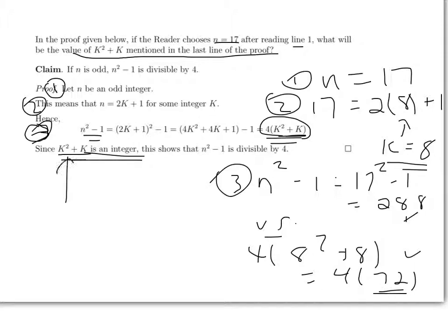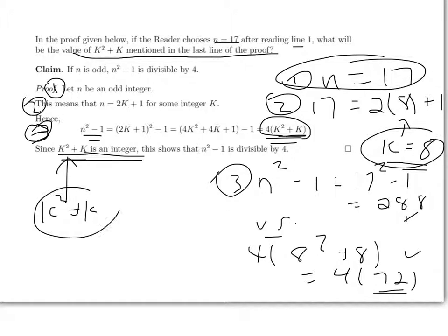So k squared plus k for, if you start with n equals 17, then your k will be 8. And by the time you get to the end, k squared plus k will be equal to 72. So 72 would be the answer to the question.